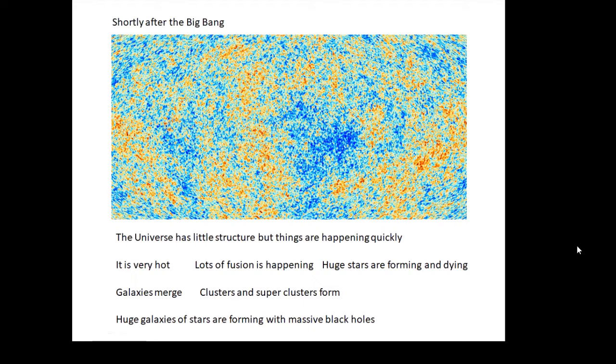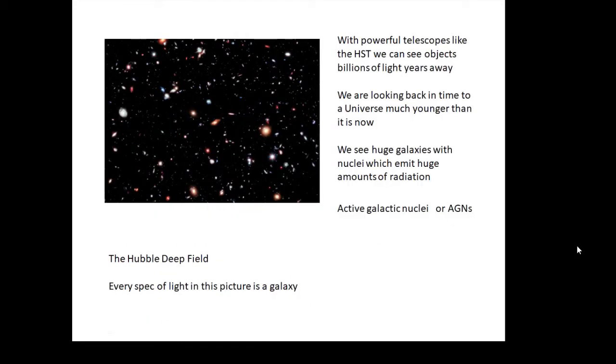There were some very big galaxies with very big stars and black holes merging together to form supermassive black holes - very big black holes in big galaxies. With powerful telescopes like the Hubble Space Telescope we can see these distant objects.